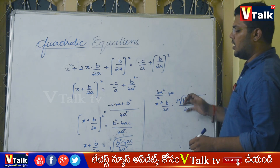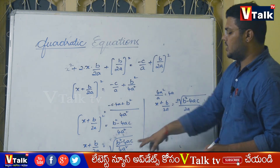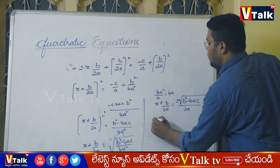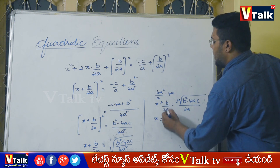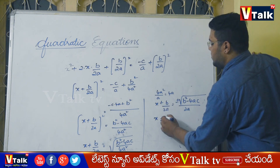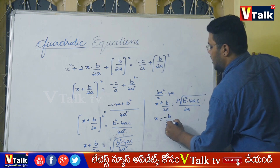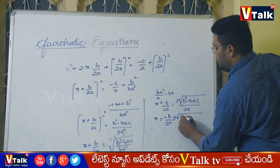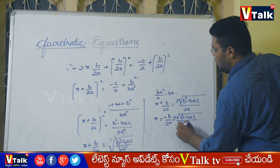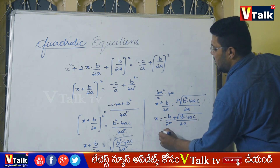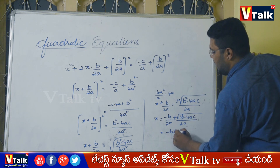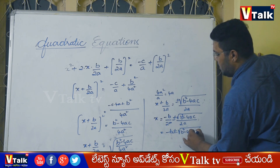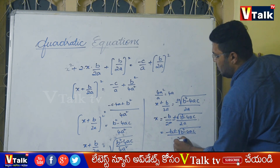Rearranging by moving b by 2a to the right side: x equals minus b by 2a plus or minus root over b squared minus 4ac by 2a, which gives x equals minus b plus or minus root over b squared minus 4ac by 2a.